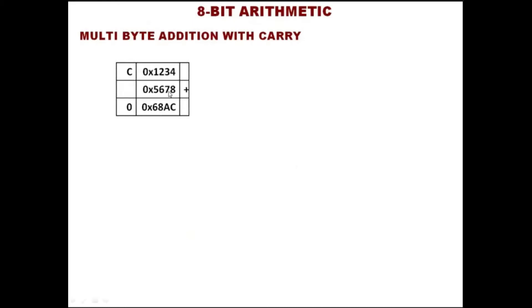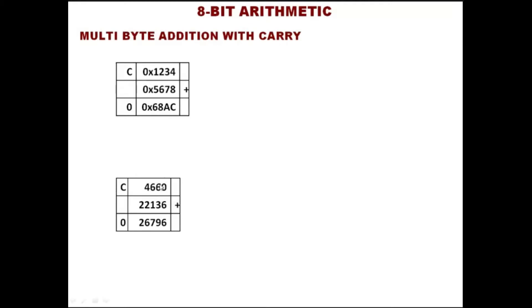1234 is added with 5678 — both are hexadecimal. The decimal equivalent of 1234 is 4660, and 5678 is 22136, and 68AC is 26796 as a decimal equivalent. We must know this because human beings work with decimal numbers. The computation happens in binary, represented in hexadecimal, but at the end 1234 must come out to the screen as 4660 so that any human being can understand.